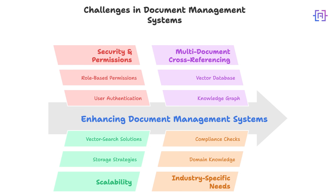Everything looks shiny, but there's always room to grow. Let's talk about real-world concerns and next-level expansions. First, security and permissions — if you are dealing with private documents you will want to implement user authentication, role-based permissions, and logging. Second, scalability — if thousands of PDFs get uploaded you will need robust storage strategies and perhaps more sophisticated vector search solutions. Third, multi-document cross-referencing — you could incorporate a vector database or a knowledge graph for advanced semantic linking.